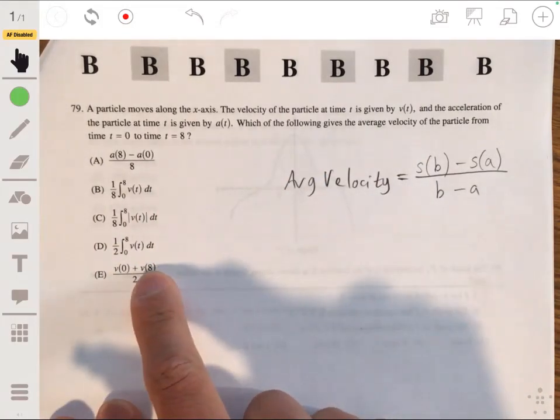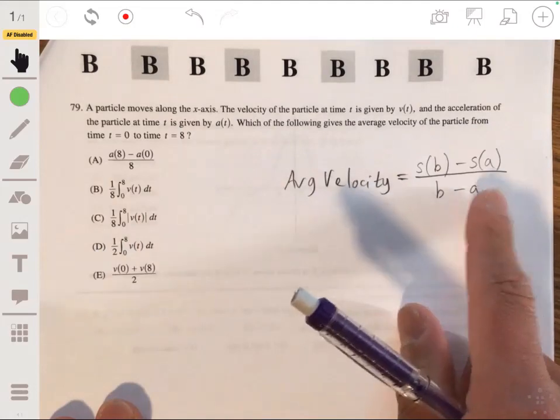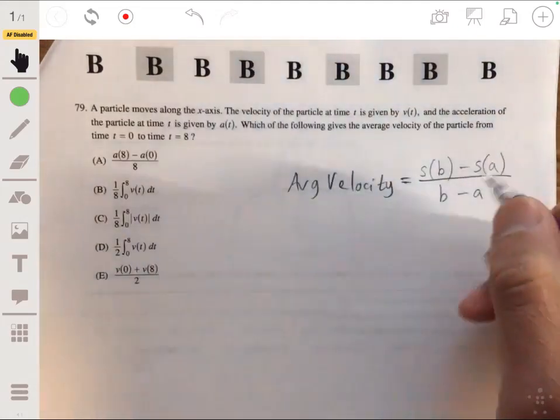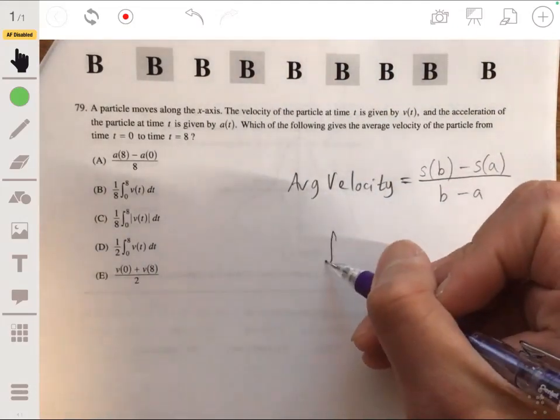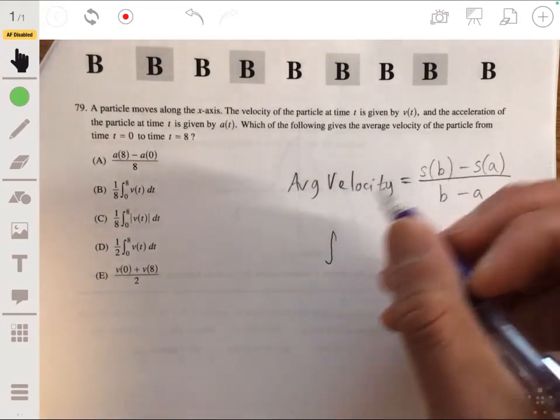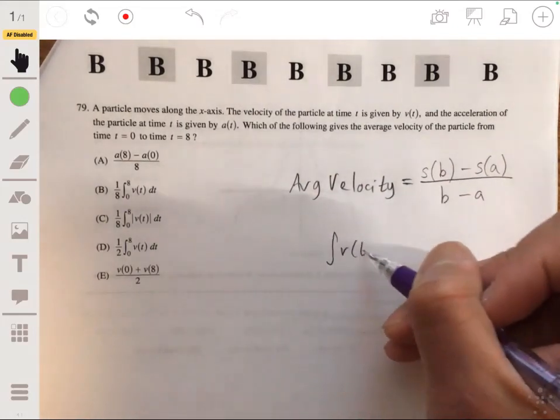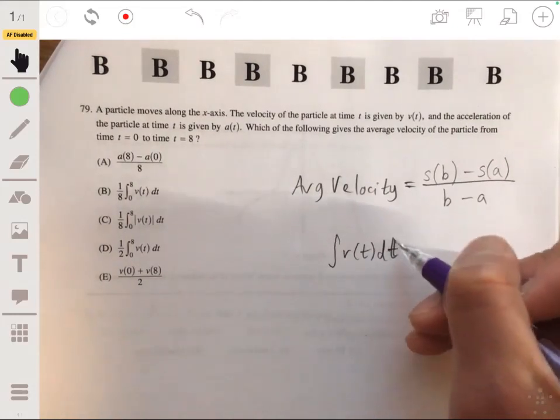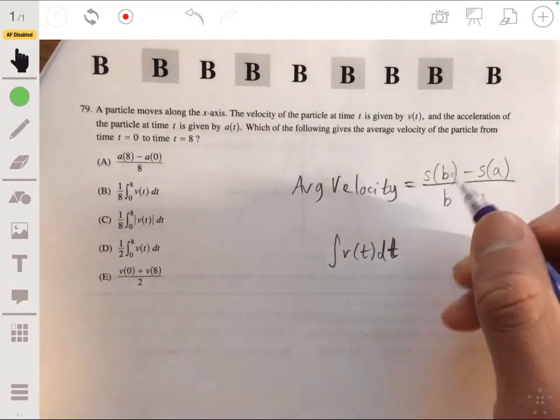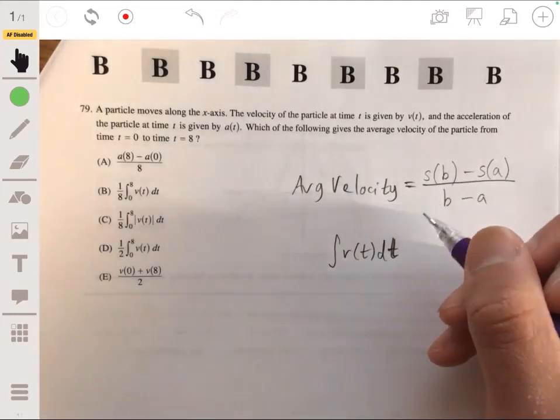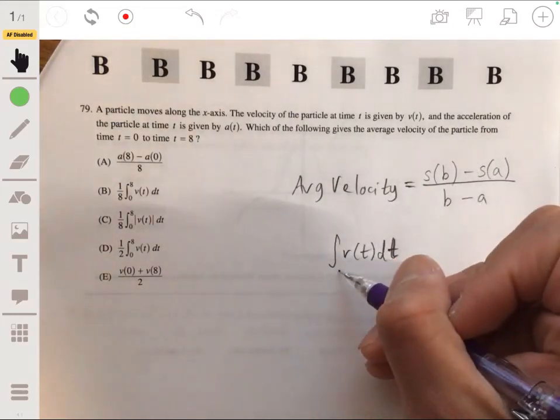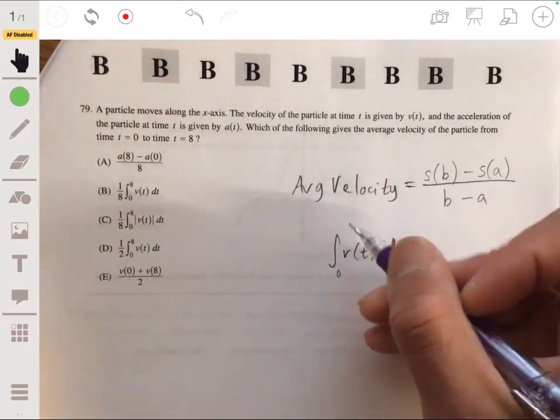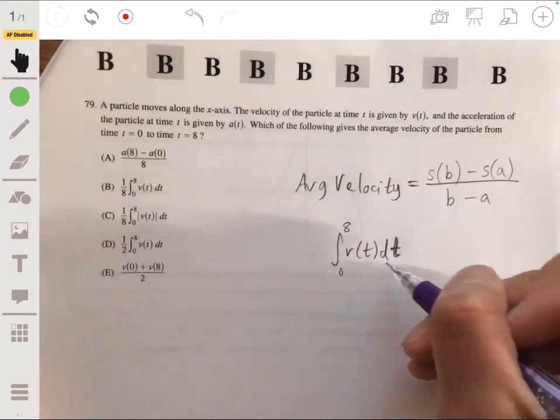See, we're given a velocity and acceleration. Another way to think of this is how would you get the position equation or the position function? And you would get that by integrating velocity because the antiderivative of velocity is position, or the derivative of position is velocity.